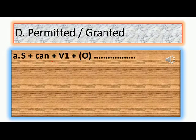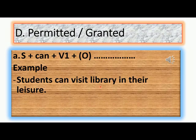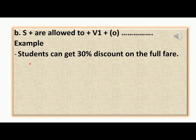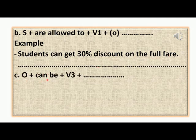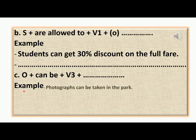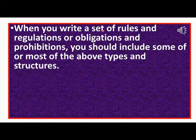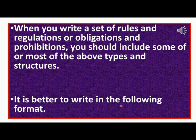Type D — Permitted or Granted. Structure (a): 'Subject + can + V1 + object.' Example: 'Students can visit the library in their leisure time.' Structure (b): 'Subject + are allowed to + V1 + object.' Example: 'Students can get a 30 percent discount on the full fare.' Structure (c): 'Object + can be + V3.' Example: 'Photographs can be taken in the park.' When writing a set of rules and regulations, you should include some or most of the above types and structures.